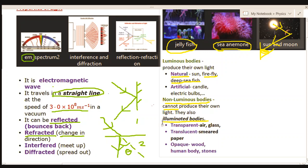Among the classes of illuminated bodies or non-luminous bodies are transparent bodies that allow large amounts of light to pass through them—example is air and glass. Translucent bodies allow only a small amount of light to pass through them—example is smeared paper. Opaque bodies do not allow light to pass through them at all, and therefore they can only be seen when light falls on them. Examples include wood, the human body, stones, and the rest.